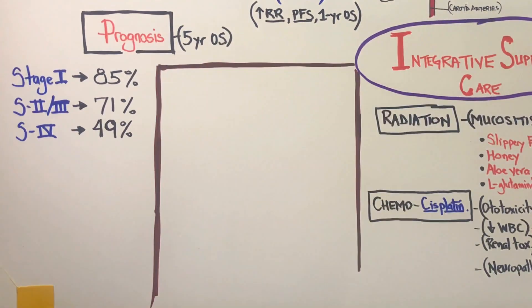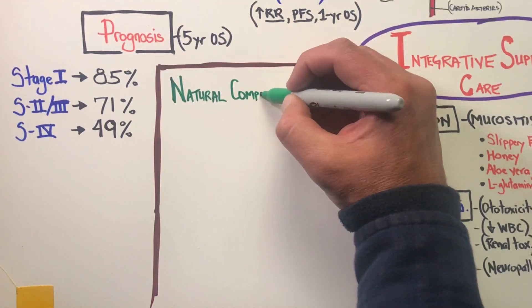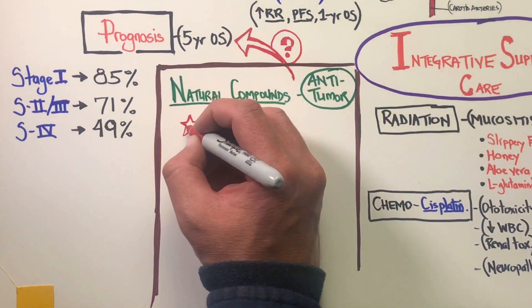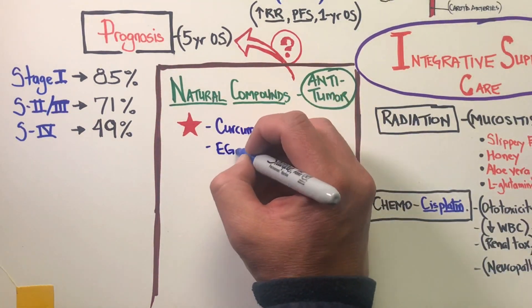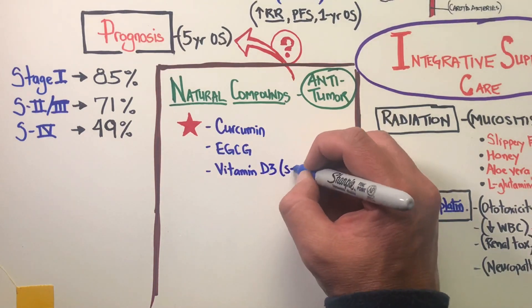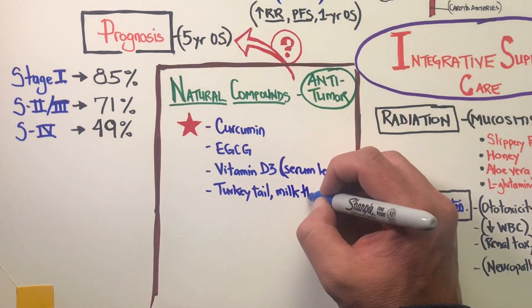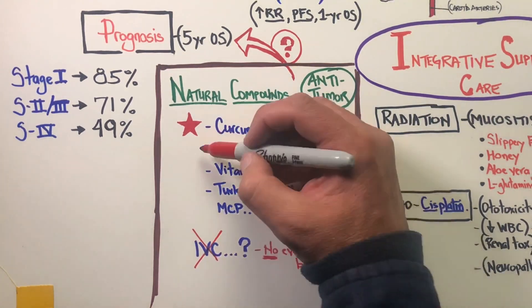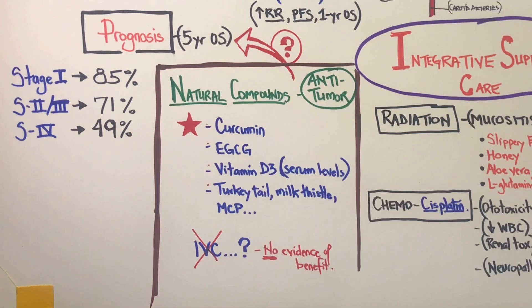Again, mucositis is one of the major complications and is a major focus for all of my patients receiving radiation to this location. Natural compounds with the potential for anti-tumor benefit — can they augment standard care to impact five-year overall survival? The list with the greatest amount of evidence: curcumin clearly has the most data to show anti-tumor activity against laryngeal and pharyngeal carcinoma. Others with significant published research include green tea, achieved vitamin D levels in the serum, turkey tail, milk thistle, and modified citrus pectin.